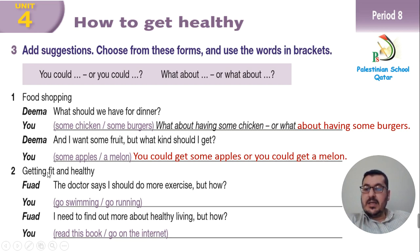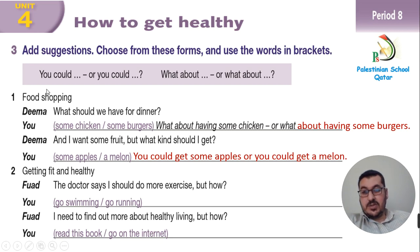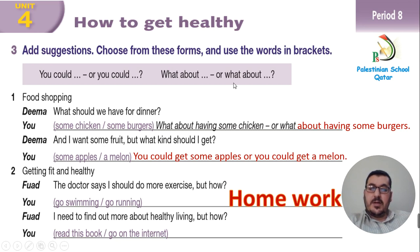Number 2: Getting fit and healthy. Fuad says: 'The doctor says I should do more exercise — but how?' You say: 'You could go swimming' or 'You could go running.' Fuad also says: 'I need to find out more about healthy living — but how?' You say: 'You could read this book' or 'You could go on the internet.' This part is your homework — open your notebook and write these suggestions using 'you could' or 'what about.'